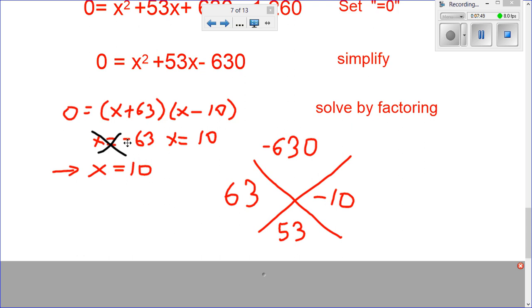Solving, we get x is negative 63, x is positive 10. And remember, we don't use the negative value in terms of distance. So, our value for x will be 10.